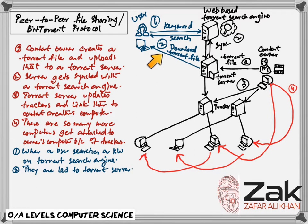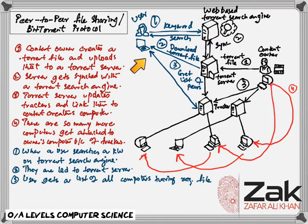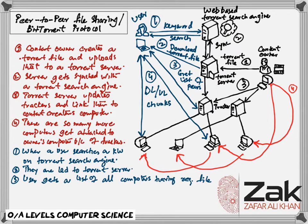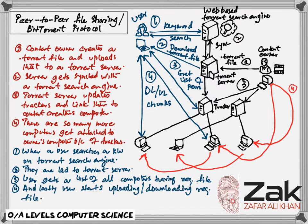Secondly they are led to the torrent server which actually has the file that was created and then they are led to the trackers and they get a list of all the computers having the required files. Afterwards user gets a list of all the computers having required files and then lastly users start uploading and downloading required files.